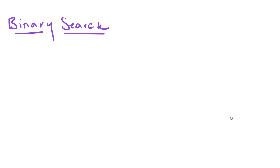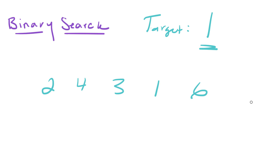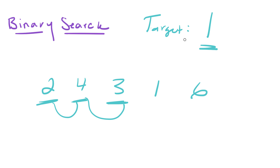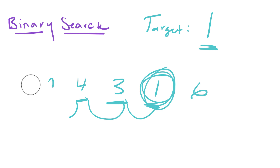Before that, I want to quickly explain what linear search is. Let's say we have five numbers: 2, 4, 3, 1, and 6, and our target is 1. How this works is we start at the leftmost element and compare each number to our target. 2 is not equal to 1, 4 is not equal to 1, 3 is not equal to 1, and then 1 equals 1. That concludes the linear search.